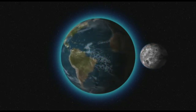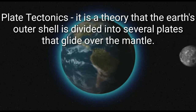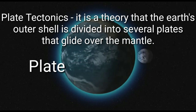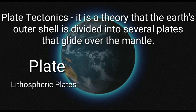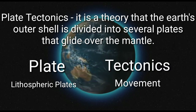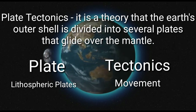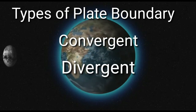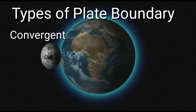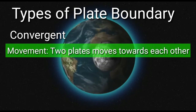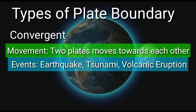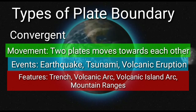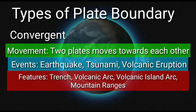Let's sum up what we learned. Plate Tectonics is a theory that the Earth's outer shell is divided into several plates that glide over the mantle. 'Plate' refers to lithospheric plates, 'tectonic' refers to movement, so together it means the movement of the lithospheric plates. There are three types of plate boundaries: convergent, divergent, and transform. In convergent boundary, the two plates move towards each other. The geological events are earthquake, tsunami, and volcanic eruptions, while the geological features are trench, volcanic arc, volcanic island arc, and mountain ranges.